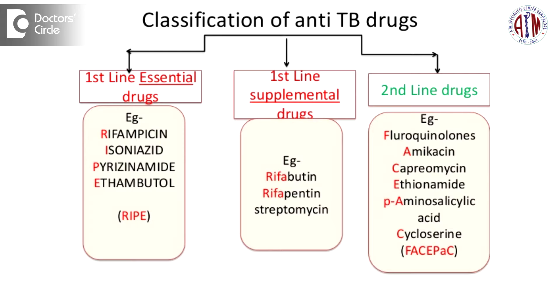Treatment protocol involves anti-tubercular drugs. We start with a 4-drug regime initially, then switch over to a 2-drug regime. In skeletal tuberculosis, the duration of treatment is a minimum of 1 to 1.5 years. In soft tissue tuberculosis, the treatment remains 6 to 9 months.